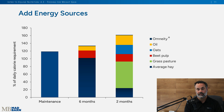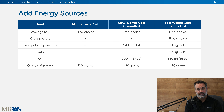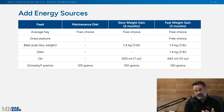To accelerate this over two months, we need to make further adjustments: provide average hay free choice, put them out on pasture so they're eating as much as they want all day, include beet pulp, increase the amount of oil, always include the Omnity vitamin-mineral mix, and add oats which are highly digestible in the small intestine. In table form: maintenance is free-choice average hay plus 120 grams of Omnity per day. For slow gain over six months, add 1.4 kilograms (3 pounds) of beet pulp and 200 milliliters (7 ounces) of oil.